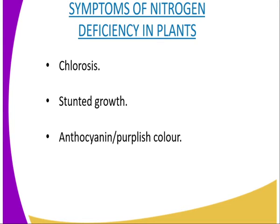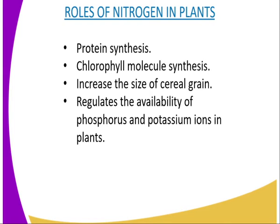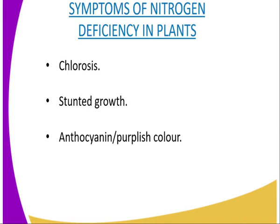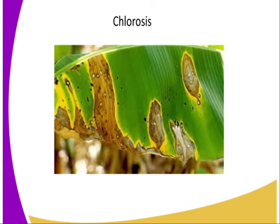Therefore, insufficient nitrogen supply will lead to phosphorus and potassium fixation, meaning they will be available in the soil but unavailable to the plant. Then we will go to the symptoms of nitrogen deficiency in the plant. We have leaf chlorosis, and number two, stunted growth. Number three, we have anthocyanin — that is a purple-rich color — which normally appears on the green pigment, as well illustrated on these diagrams here. That is chlorosis — a yellow color normally appears on the green surface of the leaf.